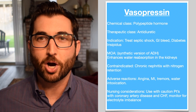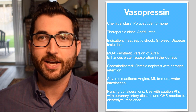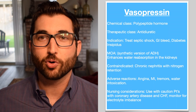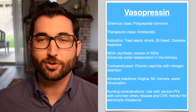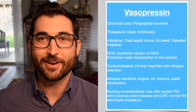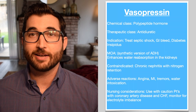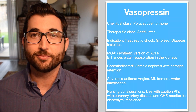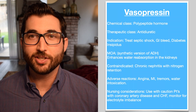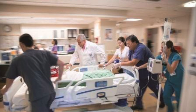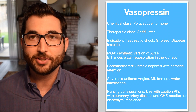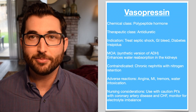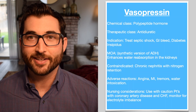Vasopressin's chemical class is a polypeptide hormone, but more commonly known is its therapeutic class, which is an antidiuretic. Its indications include most commonly septic shock, but it's also used in GI bleed and diabetes insipidus, or DI.